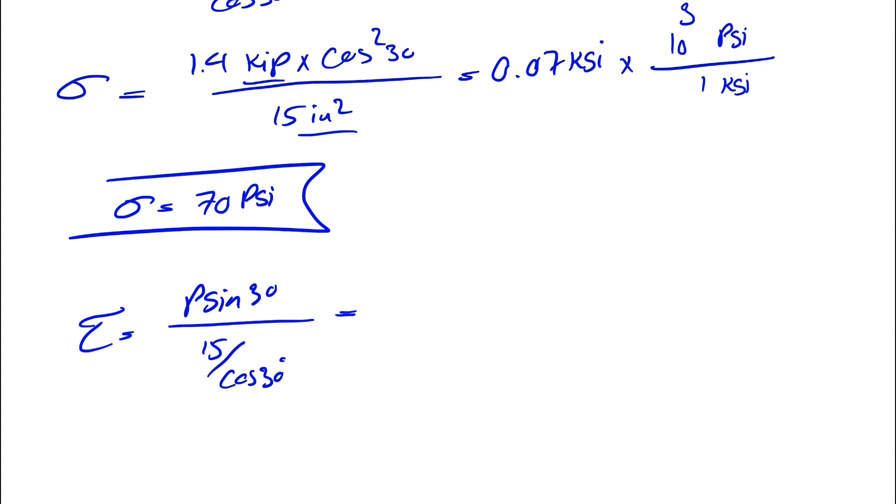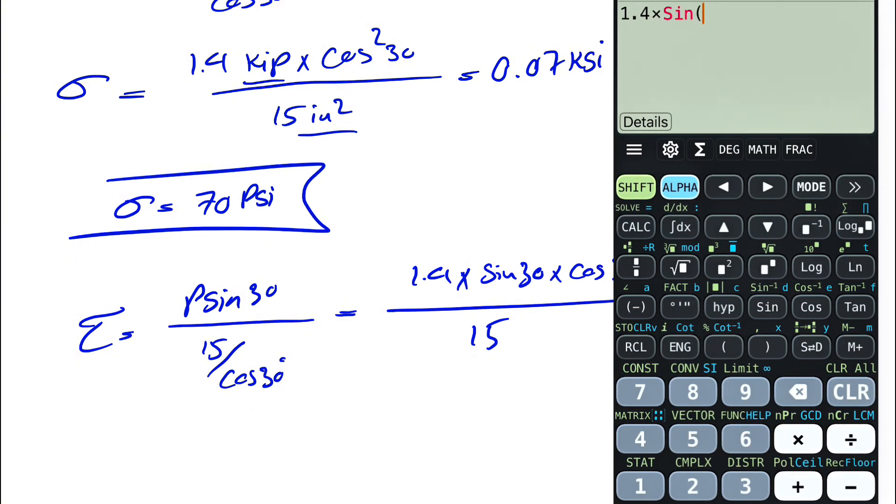So we'll have 1.4 times sine of 30 times cosine of 30 divided by 15. That's going to be 0.04 ksi.